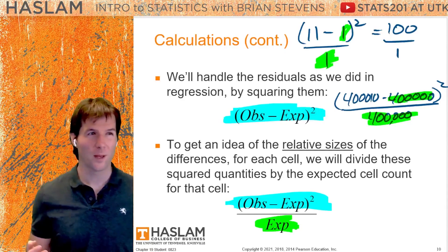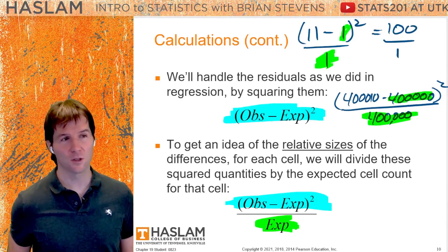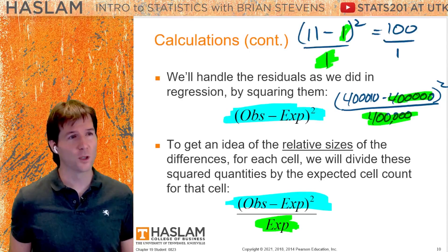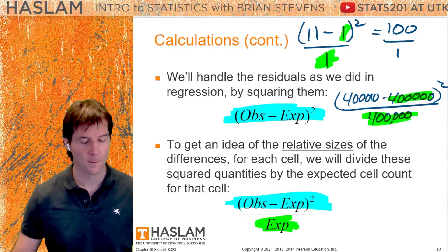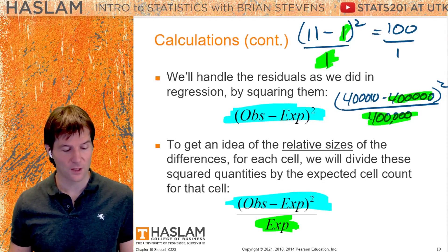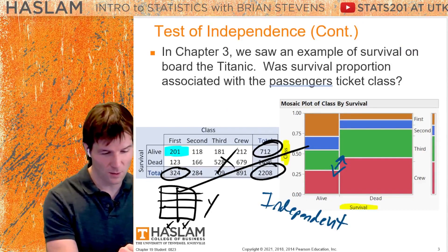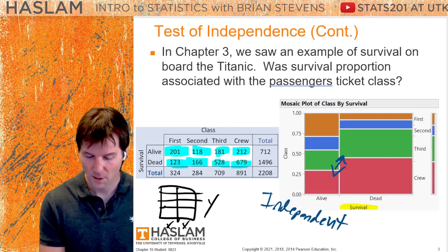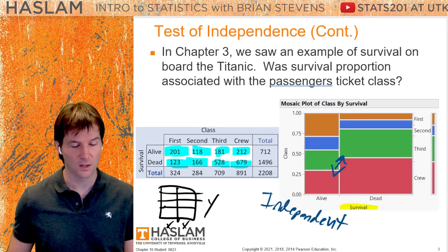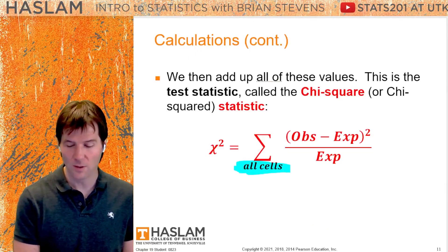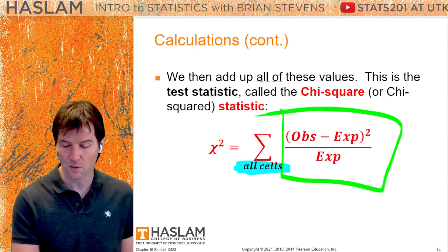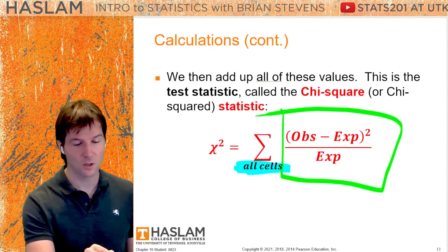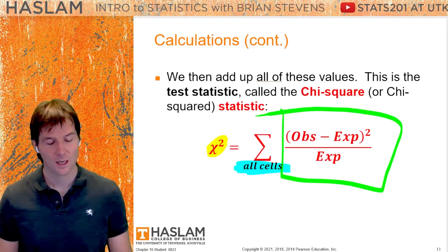When is the difference large? It depends on what we're talking about. A difference of $10 in the cost of a candy bar is a big deal; the difference of $10 in the cost of a house is virtually nothing. We have observed and expected for every single cell, so we don't just have one difference to standardize — we have a difference for every single cell. We calculate observed minus expected squared divided by expected for each, then sum those up to get what is called the chi-squared test statistic.